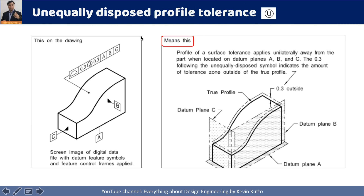The next symbol is the unequally disposed or unilateral profile tolerance zone, represented by a circled U. It is associated with profile tolerance. We have a profile of a surface with this symbol associated with a value of 0.3. The value given after the symbol represents the amount of tolerance that is outside the given boundary. In the first example, 0.3 means the tolerance zone is offset 0.3 outside the given boundary, and all surface points must lie within those two planes.